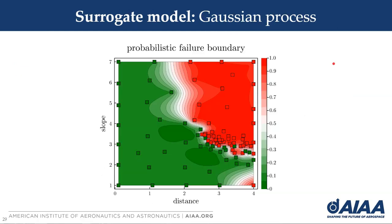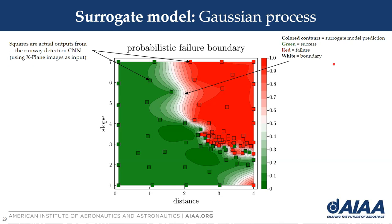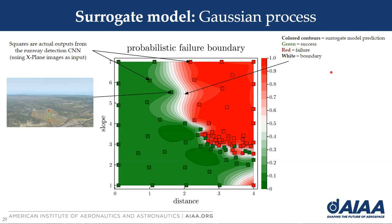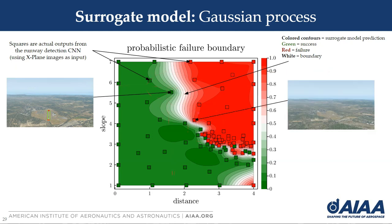The Gaussian process surrogate model is shown here where colored contours indicate the prediction of the surrogate — green means success, red means failure, and white is at the decision boundary. The squares represent the true outputs from the runway detector neural network, where we use X-Plane images as inputs. For example, one point corresponds to a particular glide slope and distance of runway, and another true observation corresponds to a glide slope and distance of runway that did not correctly detect it.